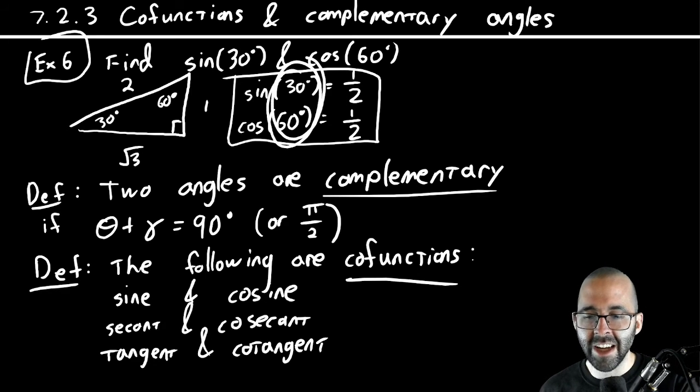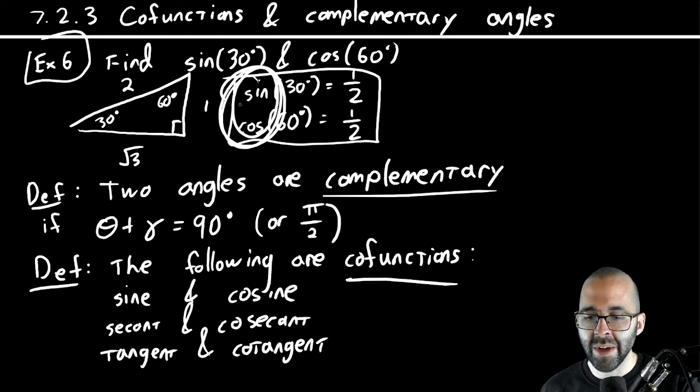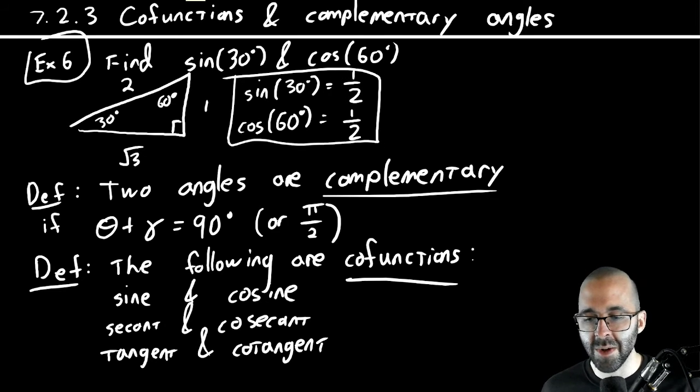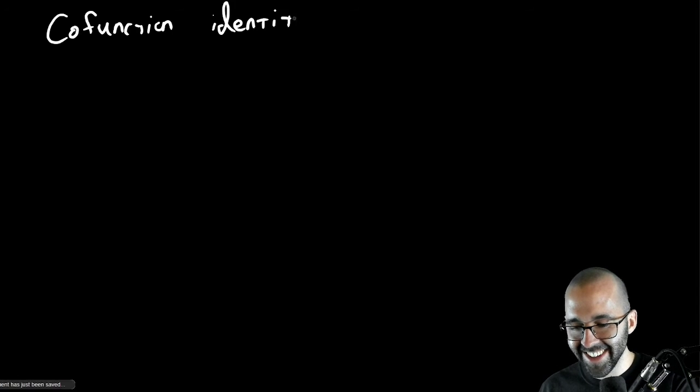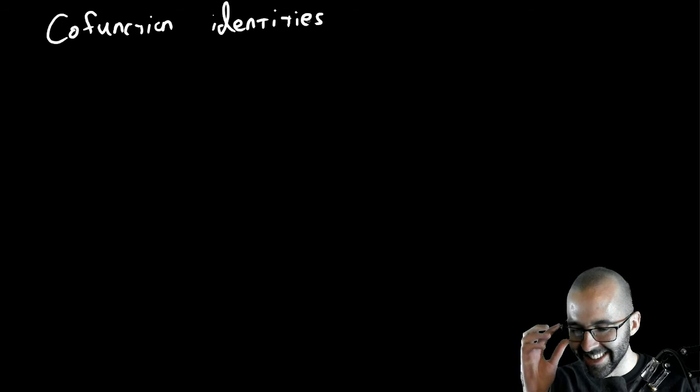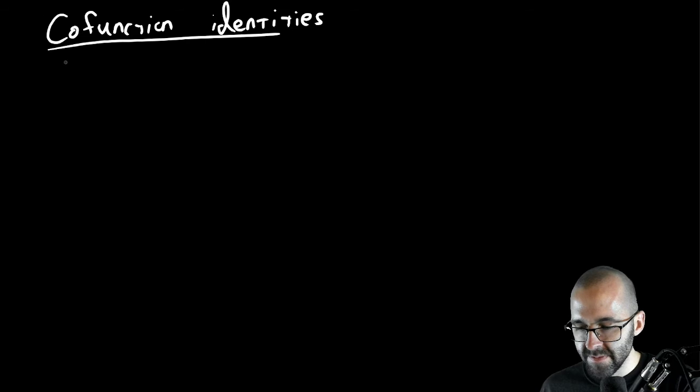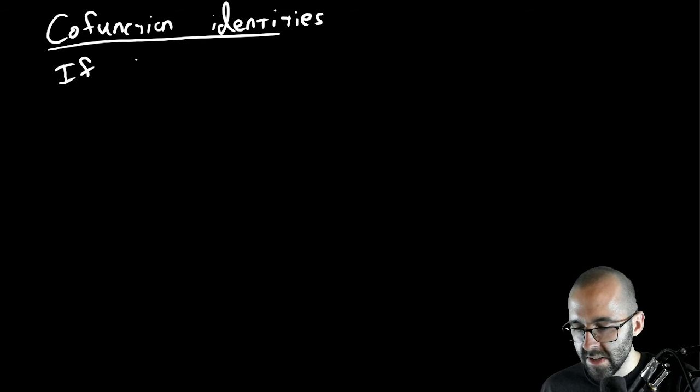So we have complementary angles adding up to 90 degrees, we have co-functions, and they're the same. That's basically all this video is talking about. Let's get that result written down. Co-function identities. Let's say if theta plus gamma equals pi over 2 or 90 degrees, if they are complementary, then: